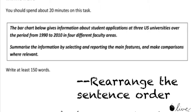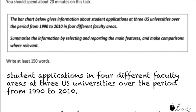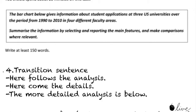Also you can rearrange the sentence order. So here you can rearrange the sentence order and make the sentence into something like this: student applications in four different faculty areas, at three US universities, over the period from 1990 to 2010. So by rearranging the sentence order, you actually create a whole brand new sentence. Last but not least is the transition sentence — you can say 'here follows the analysis', 'here come the details', or 'the more detailed analysis is below'.